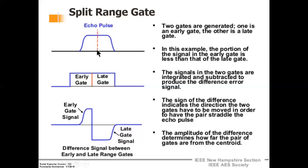The midpoint of the echo pulse and the middle of the range gate are compared to see if they are aligned. A portion of the echo pulse falls within the early gate and the rest within the late gate. The early gate signal coincides with that portion, and the rest is under the late gate. The signals in the two gates are integrated and then subtracted to produce the difference error signal.